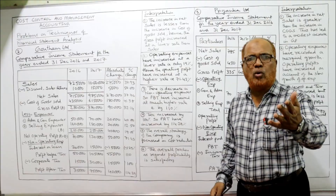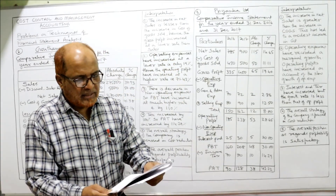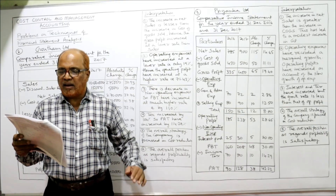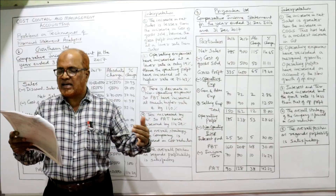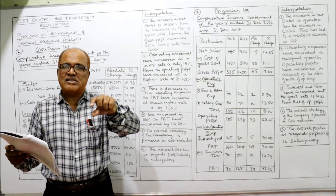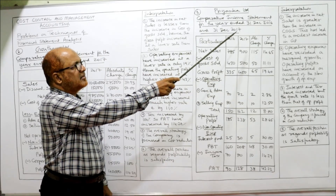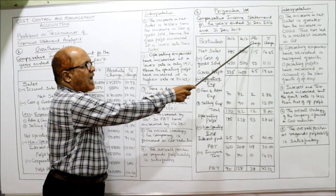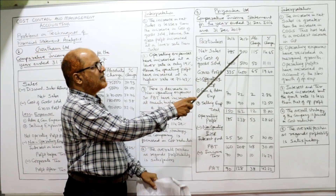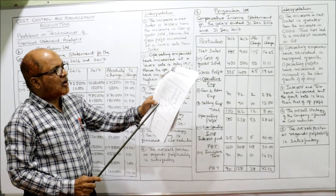After watching this lecture you will know how to give the interpretation — you can write in your own words but the logic is like this. Now the third problem: the income statement of Priyanka Limited is given for the year ending 31st December 2016 and 2017. Rearrange the figures in comparative form and study the profitability position. Comparative income statement for 2016–17: four columns — 2016, 2017, absolute change, percentage change. Net sales given: 785 and 900.